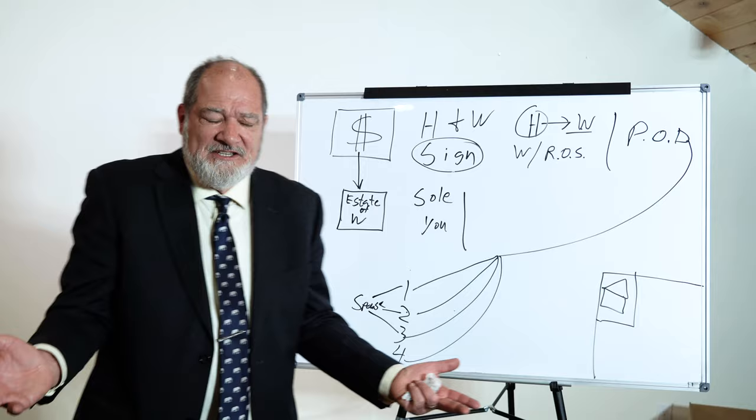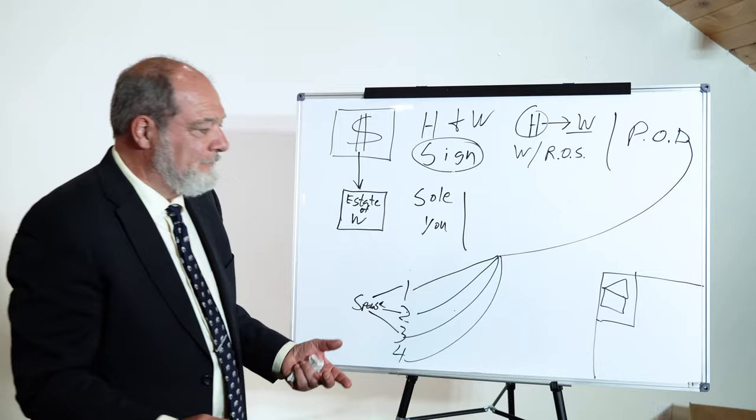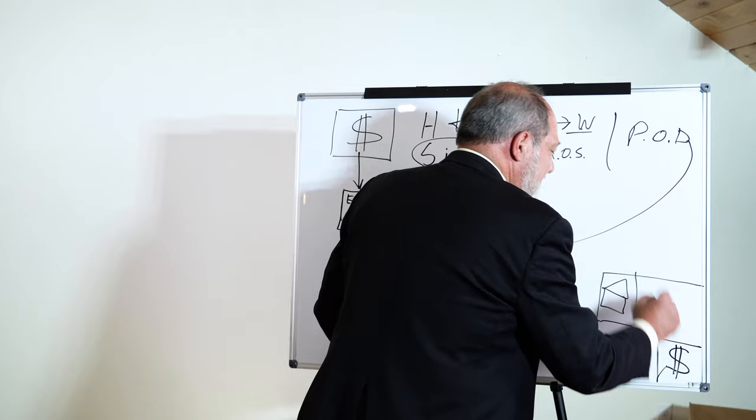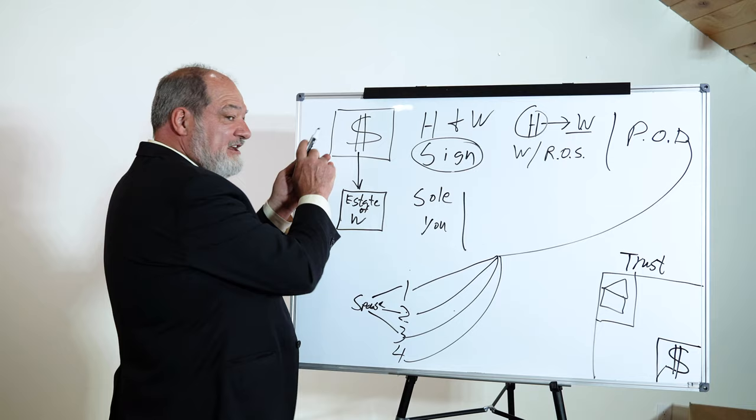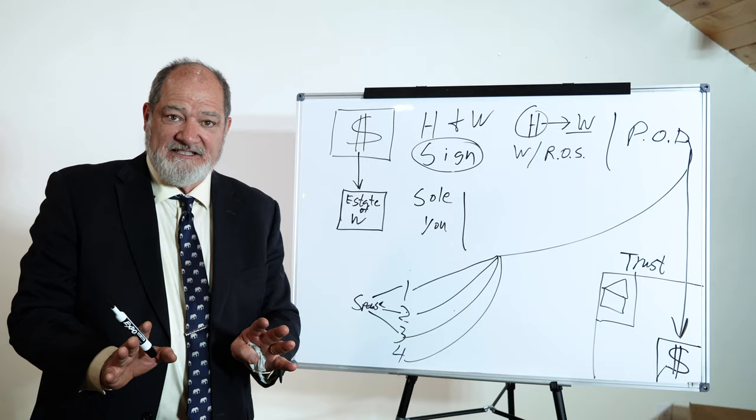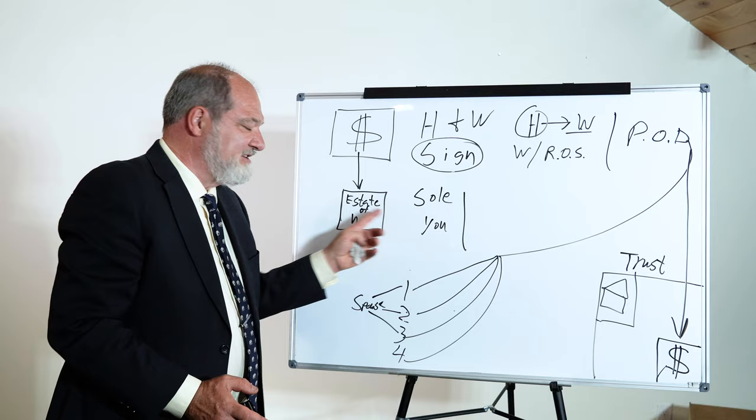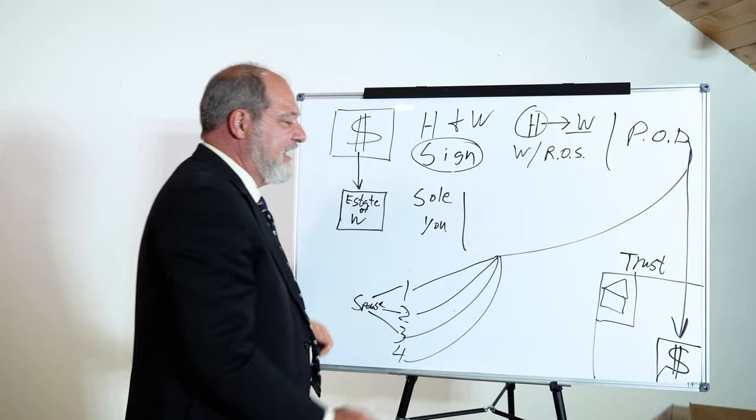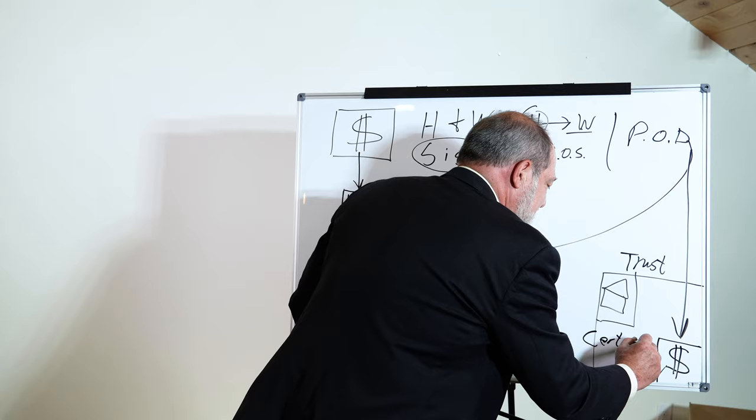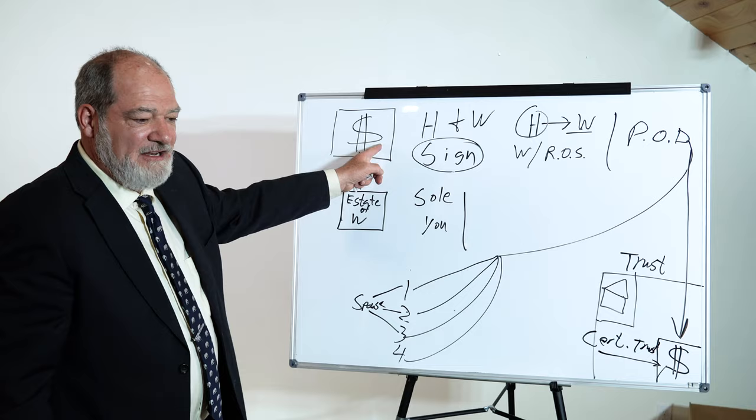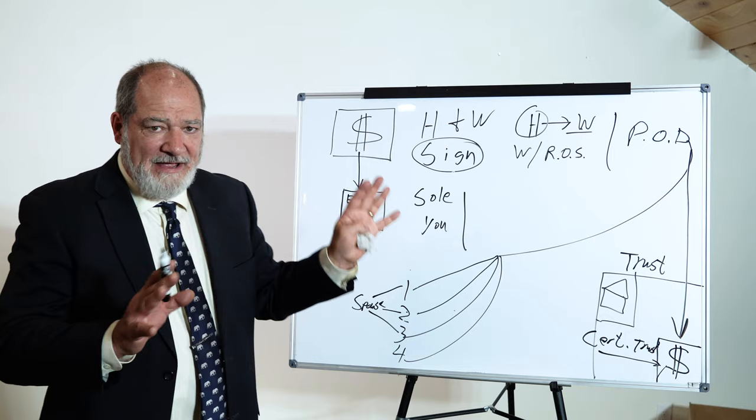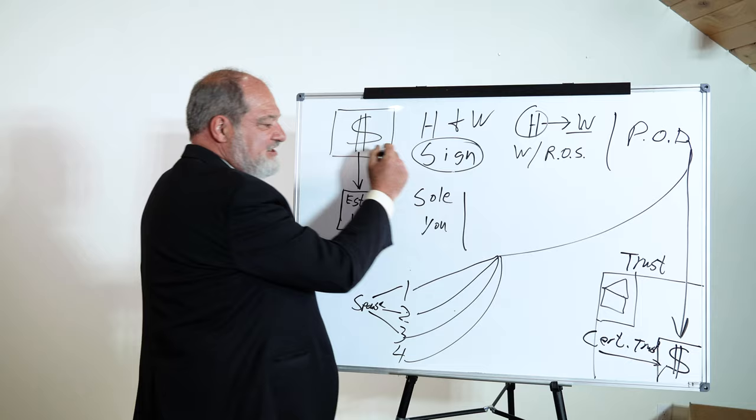So what we do is we put a bank account in the name of the trust. We make all of your bank accounts, and that doesn't matter how many you have, all payable on death to this same bank account. There's two ways we can do this. Generally speaking, if you have a personal account, either with a husband and wife or you're a single person, it's a sole account, you can change the name on that account. We use the certification of trust to either change the name on this bank account to turn it into the trust or open a new bank account in the name of the trust.